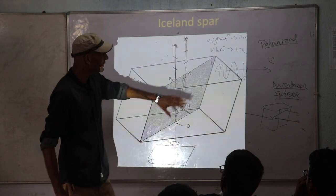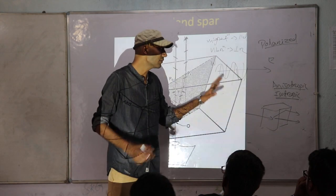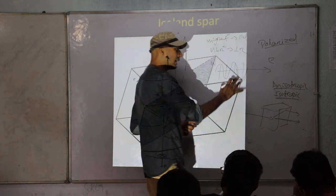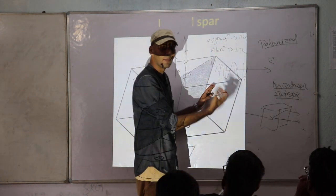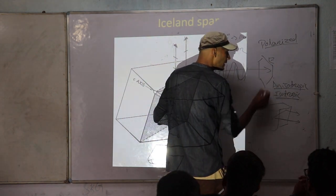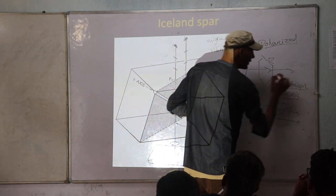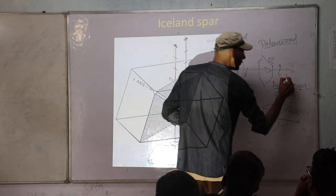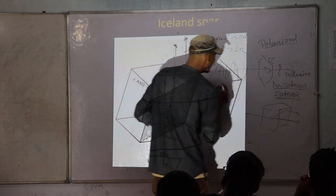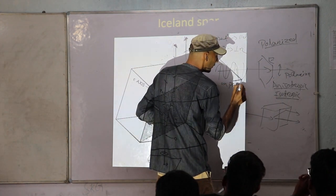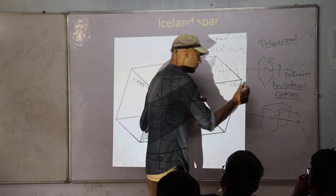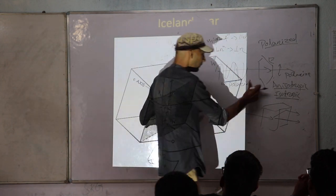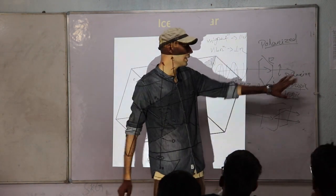Whenever a light ray enters a mineral, the mineral allows only a single vibration direction. Before entering the mineral, the light ray has many vibrations. After removing away from the mineral, it will have a single vibration — here it is polarized. Before that, it is unpolarized. When vibrating in many planes, that is unpolarized; when vibrating in a single plane, that is polarized.